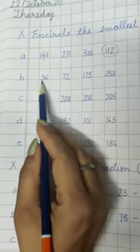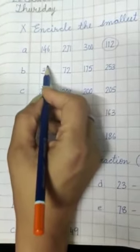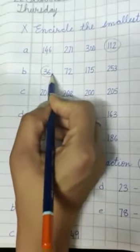First digit is 3, second is 7. Let's encircle 36, the smallest number.